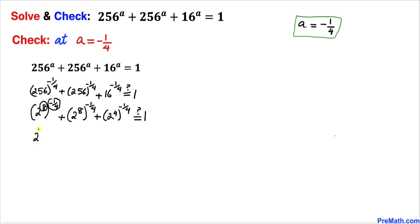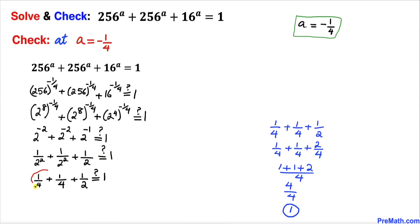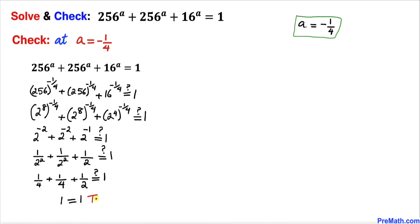Multiplying the nested exponents: 2^(8 × -1/4) = 2^(-2) = 1/4, and 2^(4 × -1/4) = 2^(-1) = 1/2. So the left-hand side becomes 1/4 + 1/4 + 1/2 = 1, which equals the right-hand side. This confirms that a = -1/4 is a valid solution.